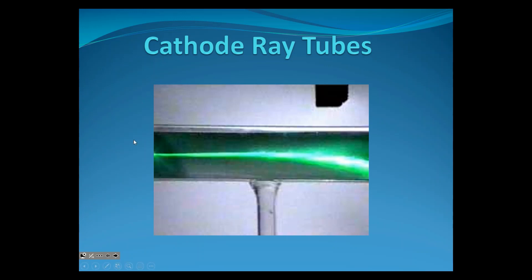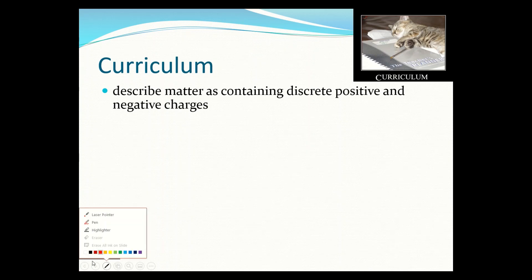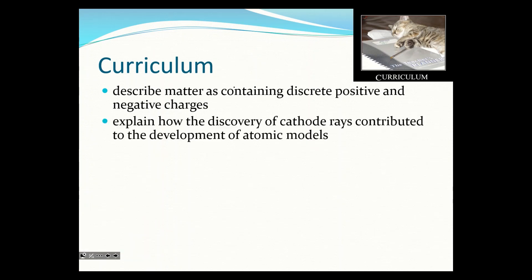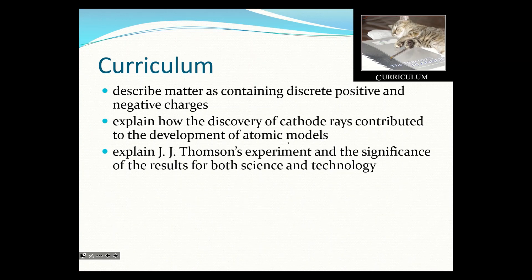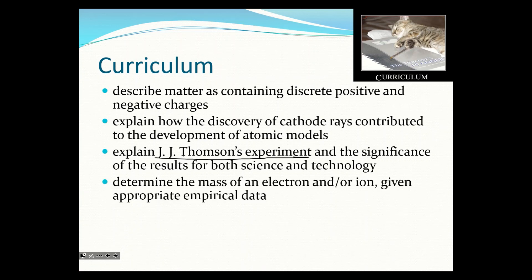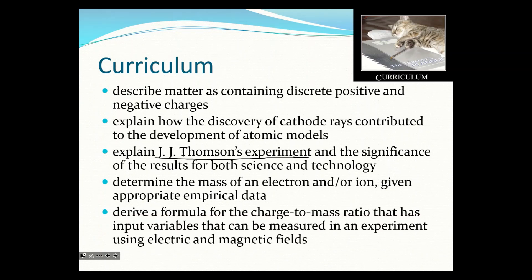The first lesson we're going to talk about is a cathode ray tube. Here's the curriculum stuff you need to know: describe matter containing discrete positive and negative charges; explain how the discovery of cathode ray tubes contributed to the development of atomic models; explain JJ Thompson's experiment — you need to know JJ Thompson because he's mentioned by name; determine the mass of an electron or ion given empirical data; and derive a formula for the charge-to-mass ratio.